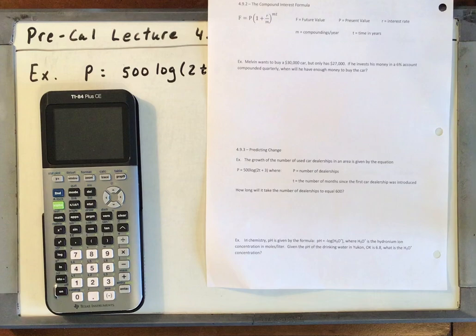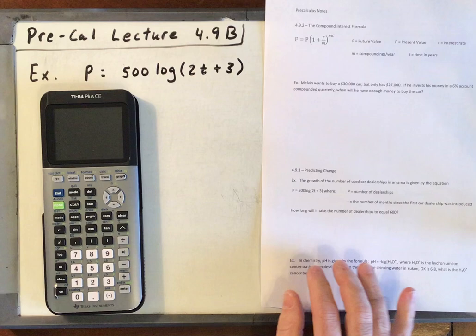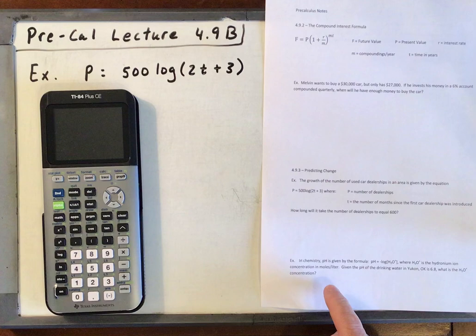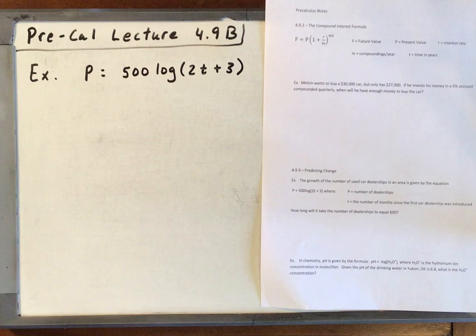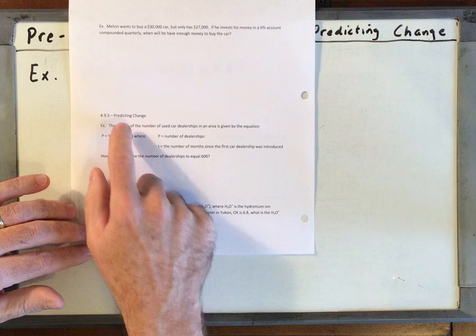Hello, this is PreCal Lecture 4.9b. You'll need your 4.9 notes. All we have to work are two problems at the bottom of the second page of the 4.9 notes. You will need your calculator. Let's just go through these examples.